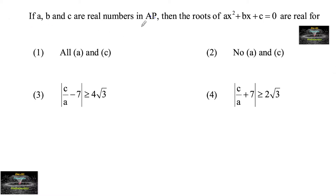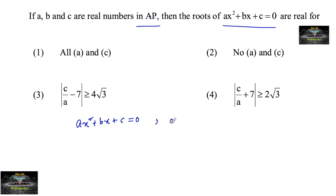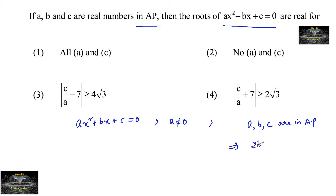If A, B and C are real numbers in AP, then find the roots of AX² plus BX plus C equals 0. Given the quadratic equation AX² plus BX plus C equals 0, let A not equal to 0. Since A, B, C are in AP, this implies 2B equals A plus C, or B equals (A plus C) divided by 2.